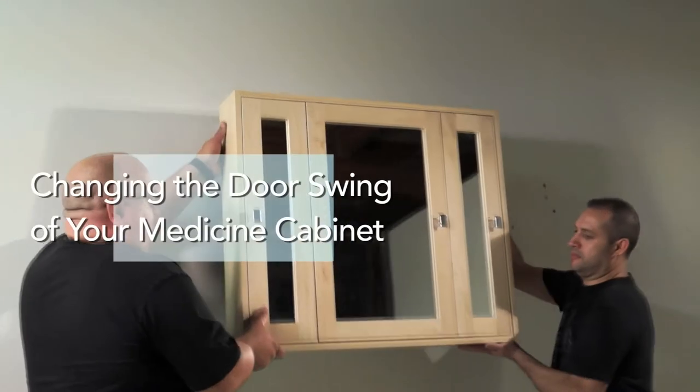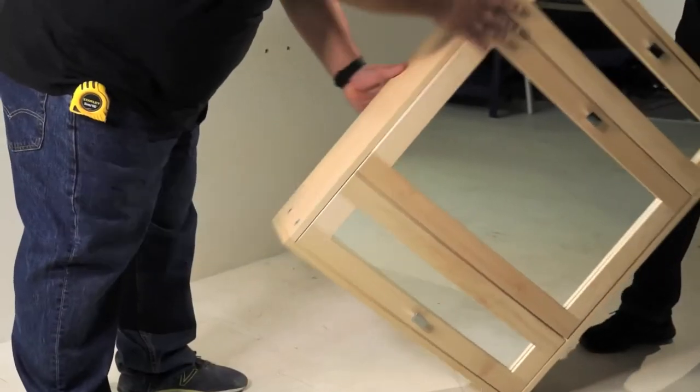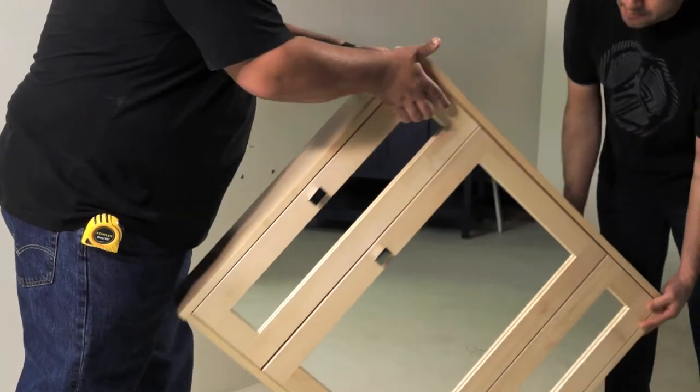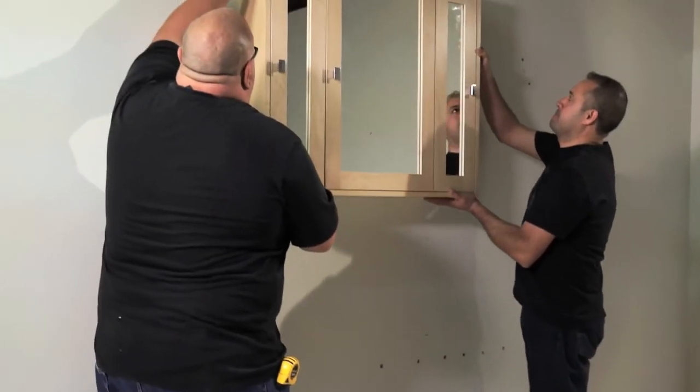For tri-view and single door medicine cabinets, to change the door swing from right to left or vice versa, simply rotate the cabinet 180 degrees and hang on your wall.